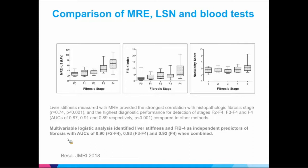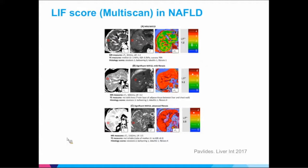Briefly, LiverMultiScan is a startup from England that developed a T2-star corrected T1. They provide colorized corrected T1 images. There are a couple of solid papers showing it can be used as a marker of disease severity in NAFLD — not necessarily a marker of fibrosis specifically, but more of a marker of typical NAFLD findings like ballooning, inflammation, and similar features. We need more data on this.